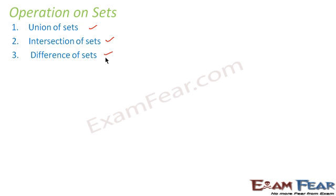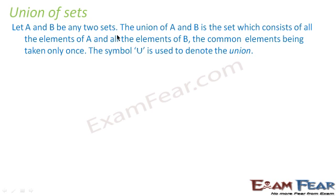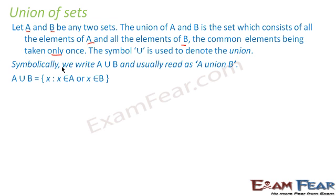What is the union of a set? Let there be two sets A and B. Union means all the elements which are elements of A and elements of B, and the common element is taken only once. In mathematical form, A union B is the set of x where x is either an element of A or an element of B. Please note: 'or' is a crucial word here — when you say A union B, it is A or B.